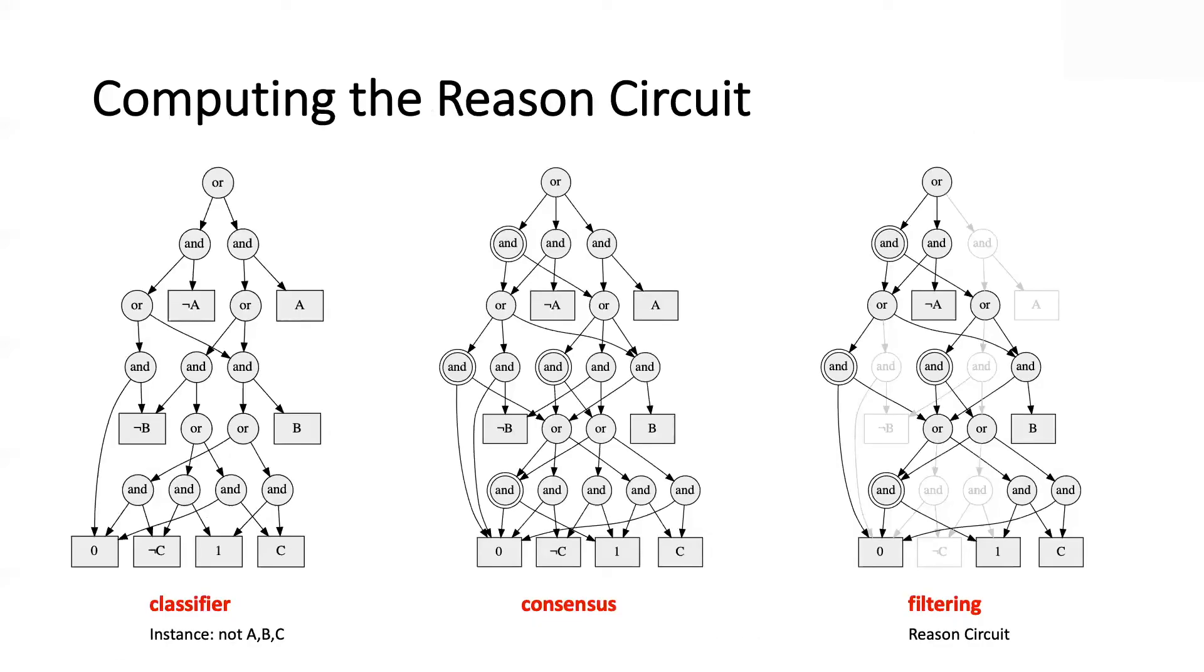Now, how do we compute the reason circuit? It's mechanically a very simple and efficient process. You start with the classifier and you have, in this case, a particular instance. We're trying to compute the reason circuit for the decision on that instance. The first step is called consensus, which effectively adds a bunch of nodes to the classifier circuit, the ones in double circle. And this operation of consensus is very similar to the consistent operation on disjunctive normal form. It just generalizes it to circuits to some kind of deductive closure.